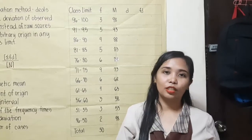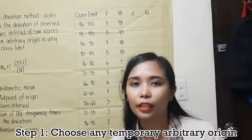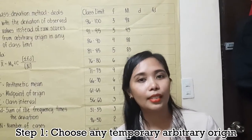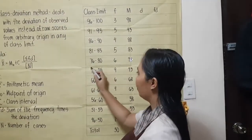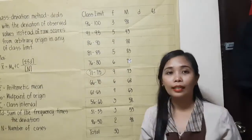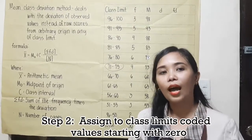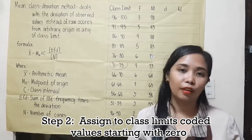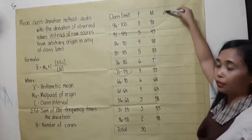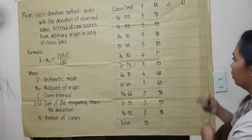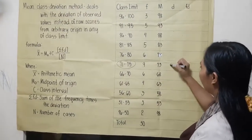We will use this same table again to get the mean using the class deviation method. First, you may choose any temporary arbitrary origin from any of the class limits. In this case, I will choose the 71 to 75 class limit. Second, assign coded values starting with zero at the origin; above zero, deviations are positive values, and below it they are negative.